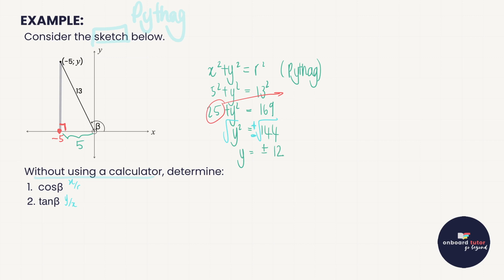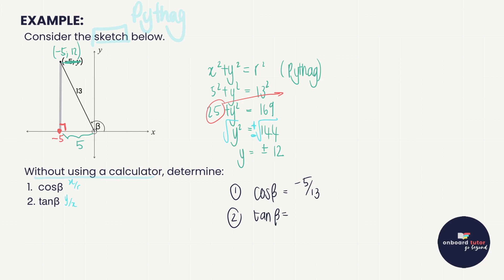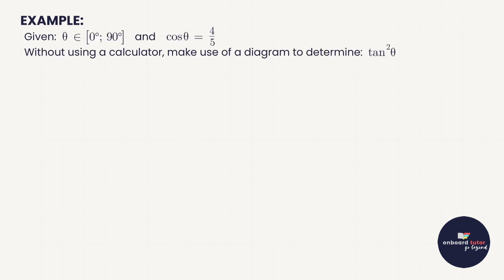Looking at the sketch, this point is on the positive y side, so y is positive 12. The coordinate is therefore (−5, 12). Now I can answer the questions: cos beta = x over r = −5 over 13, and tan beta = y over x = 12 over −5. That's our first Pythagoras problem solved.